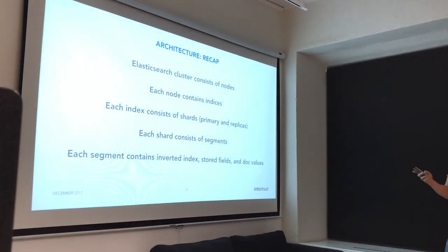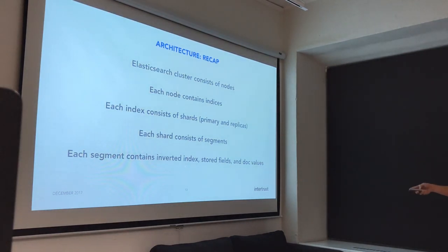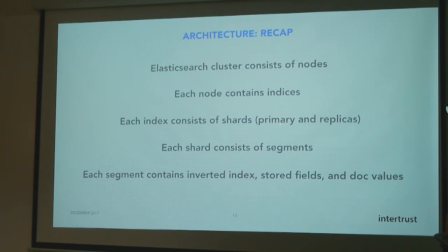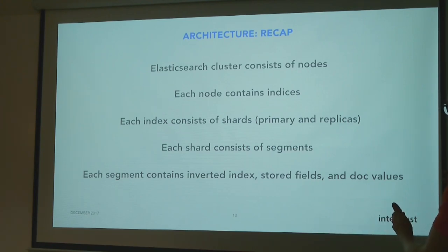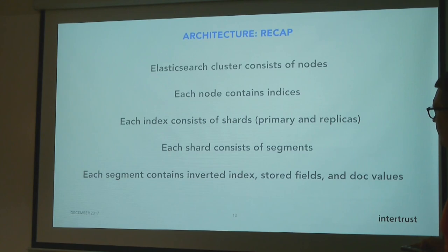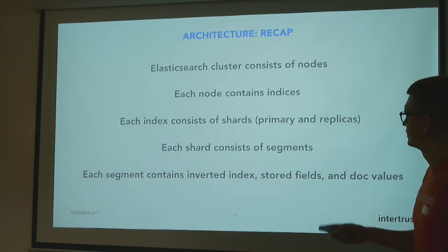To summarize the architecture: a cluster contains nodes, a node contains indices, an index contains shards. You must have primary shards and can optionally have replicas — you can change the number of replicas but not the number of primary shards. A shard contains segments, which are created every refresh interval and merged into bigger segments periodically. A segment contains an inverted index, stored fields, and doc values.